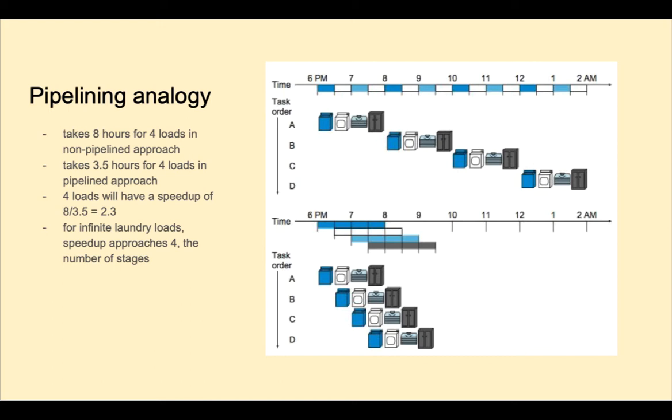So if you had infinite loads of laundry, which by the way you will when you have children, the speedup would approach 4.